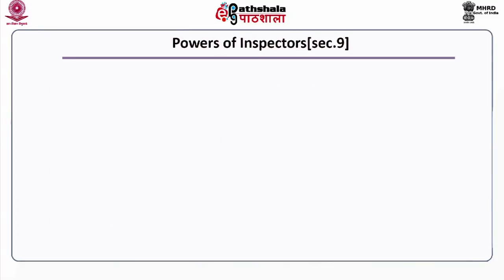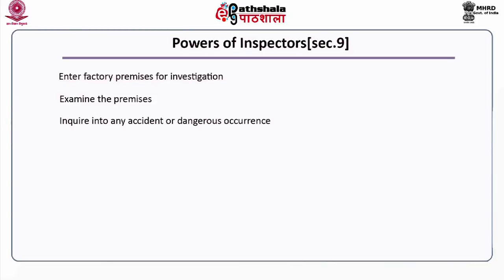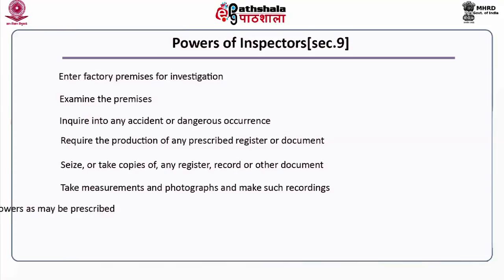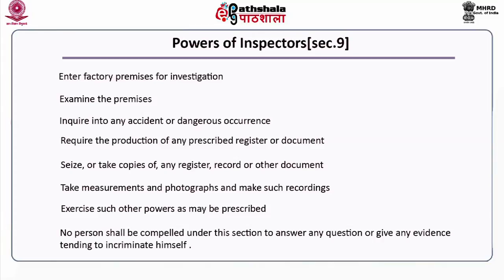Powers of inspector under Section 9: every inspector can enter factory premises for investigation and examine the premises. They can inquire into any accident or dangerous occurrence, require the production of any prescribed register or document, seize or take copies of any register, record or other document, take measurements and photographs, and exercise such other powers as may be prescribed. No person shall be compelled under this section to answer any question or give any evidence tending to incriminate himself.